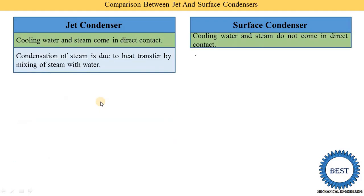The second point: condensation of steam is due to heat transfer by mixing of steam with water. In a condenser, we know that the condensation process is carried out — condensation means vapor is converted into liquid form. In a jet condenser, the steam is condensed due to heat transfer by mixing of steam with water. When the steam is mixed with the water, the water absorbs heat energy from the steam and the steam starts to condense.